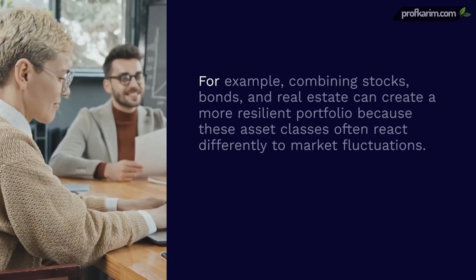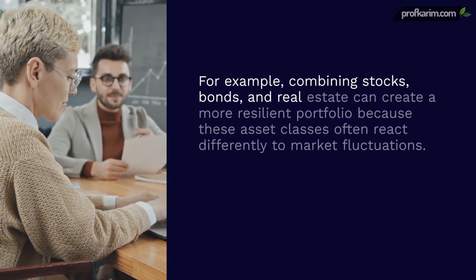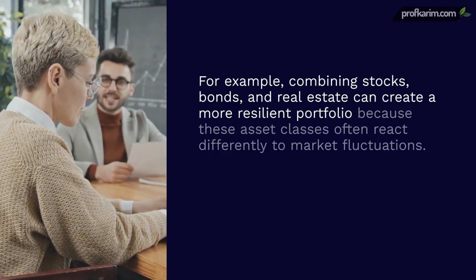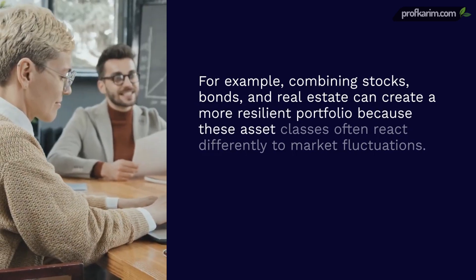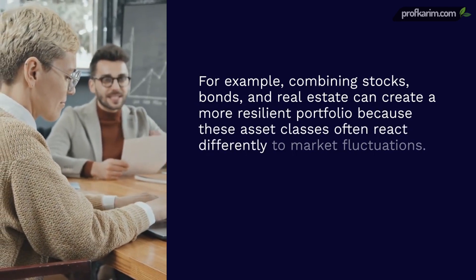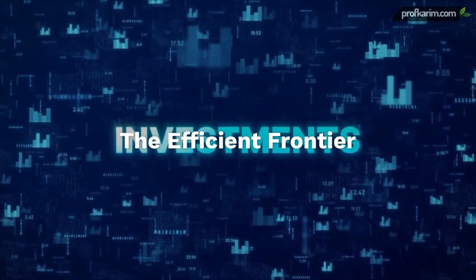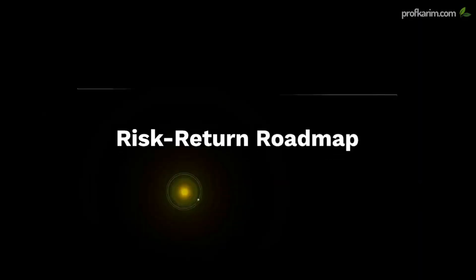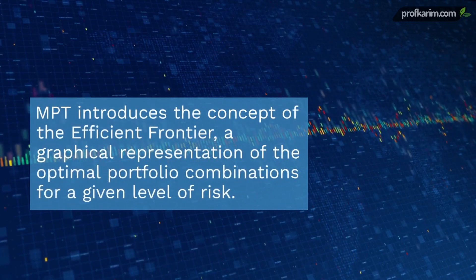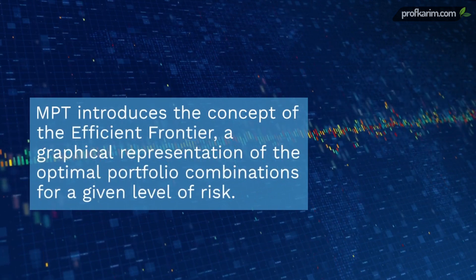For example, combining stocks, bonds, and real estate can create a more resilient portfolio, because these asset classes often react differently to market fluctuations. The efficient frontier: your risk-return roadmap. MPT introduces the concept of the efficient frontier, a graphical representation of the optimal portfolio combinations for a given level of risk.